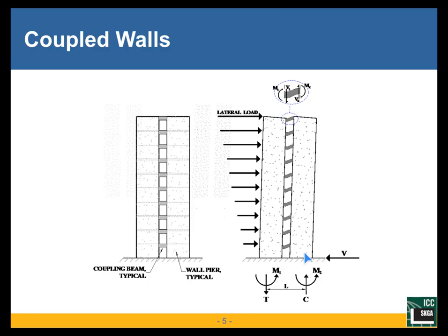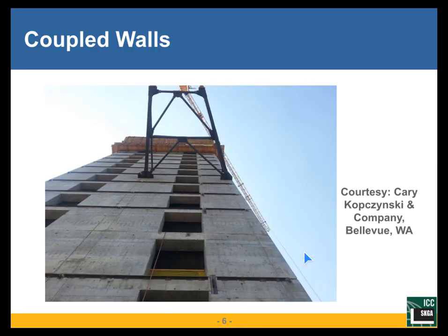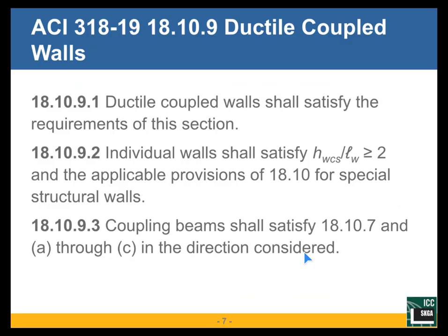We hadn't gone there until ASCE 7-16, but now that has changed. This is a real-life example — a building in the Seattle area. Kari Kapsinski's office gave me the picture: three shear walls with two sets of coupling beams. When we thought that ASCE 7 Table 12.2-1 should have explicit rows on coupled shear wall systems, it became pretty obvious that we do not have a definition for a coupled wall system.